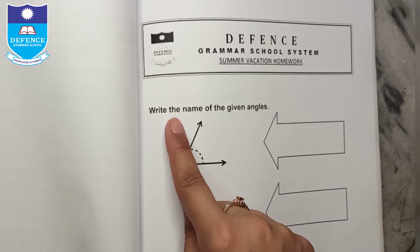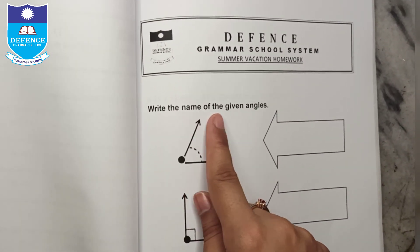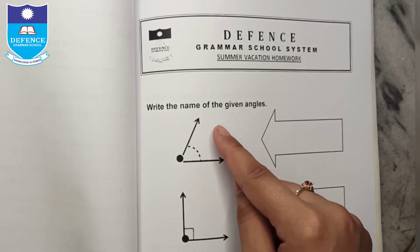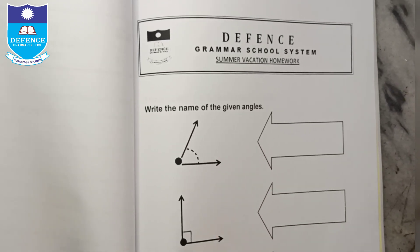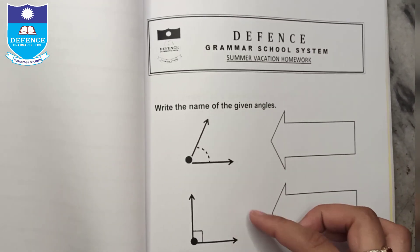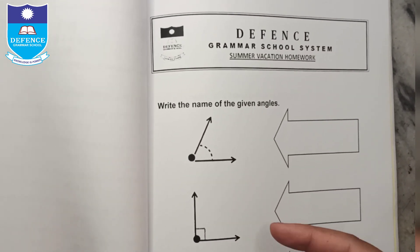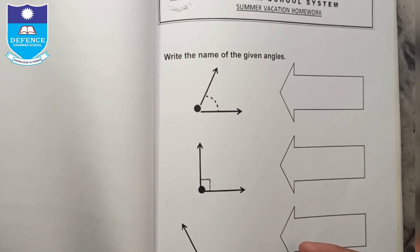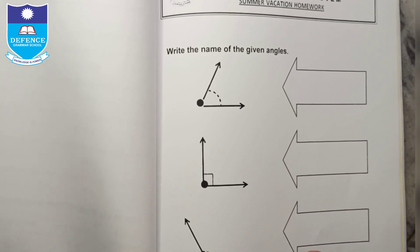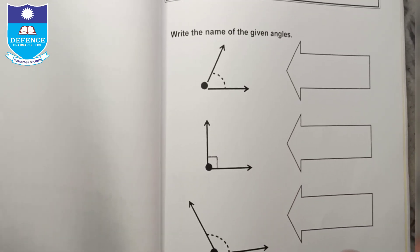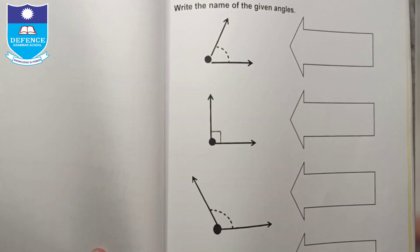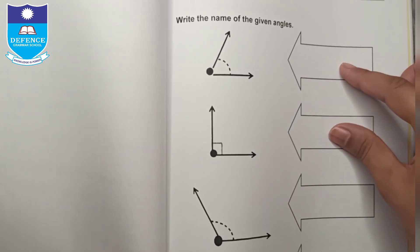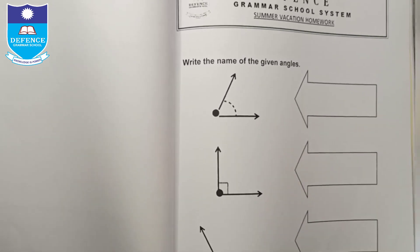Your next question is: write the name of the given angles. यहाँ पर कुछ angles दिये गए हैं — हर angle को गौर से देखें और सोचें कि यह कौन सा angle है: obtuse angle है, right angle है, या कौन सा angle है। उसका नाम given arrow में write करें।